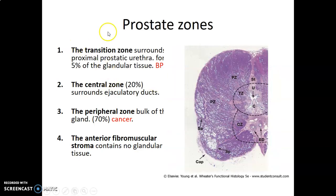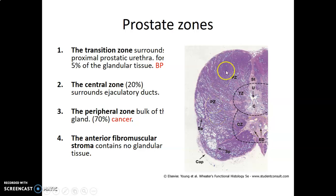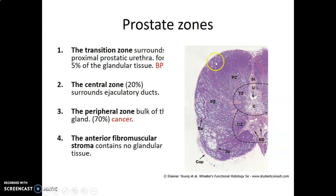So we have zones of the prostate. We have a transition zone near the prostatic urethra, which is mainly prone to benign prostatic hyperplasia (BPH). Then there is the central zone that surrounds the ejaculatory ducts. The peripheral zone forms the bulk of the gland — about 70% of it — and is mostly prone to cancer. So: transitional zone is prone to BPH, peripheral zone is prone to cancer, central zone is close to the ejaculatory ducts, and the anterior portion contains fibromuscular stroma with no glandular tissue.